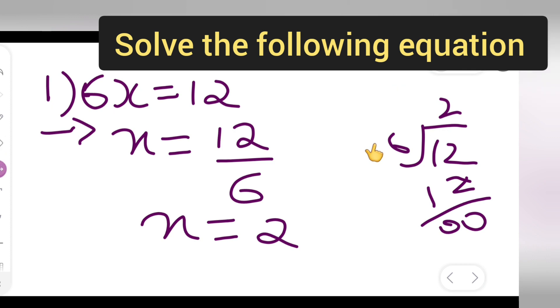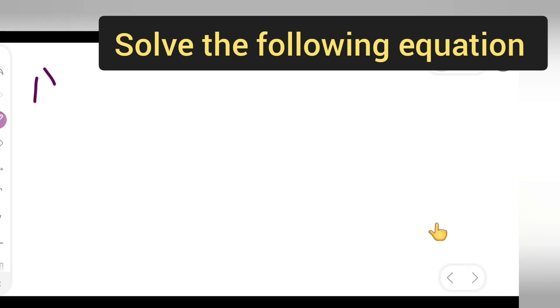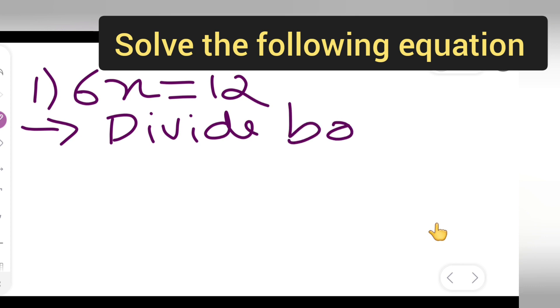So, and one more method is there which you all can apply. That is, what is the question? 6x is equal to 12. So what you can do is divide both sides by 6. Okay?